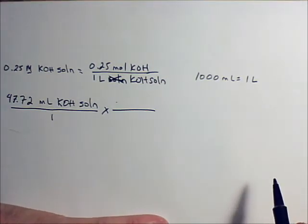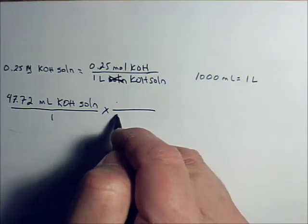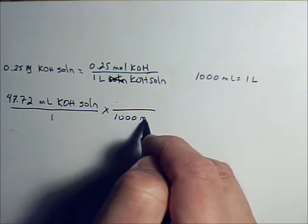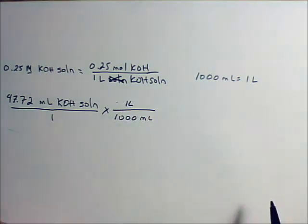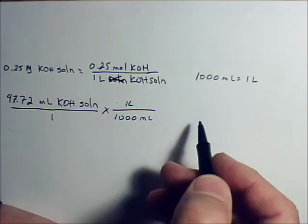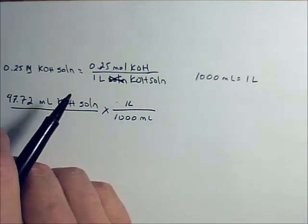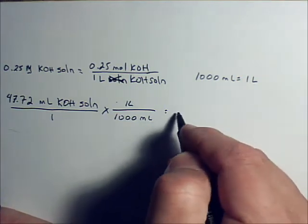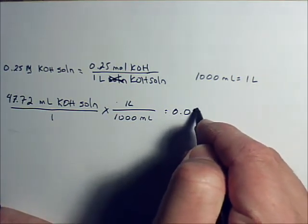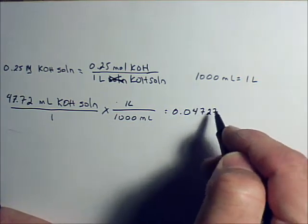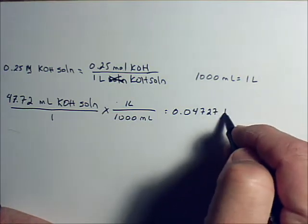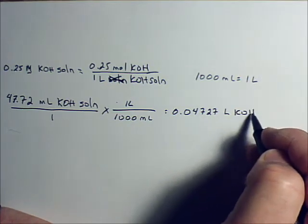All these things you have to have on your paper. You have to show me the work. So I'm going to put 1,000 milliliters here and 1 liter here. Now, I could go ahead and do the math. And I believe you're going to get 0.04727 liters of KOH solution.